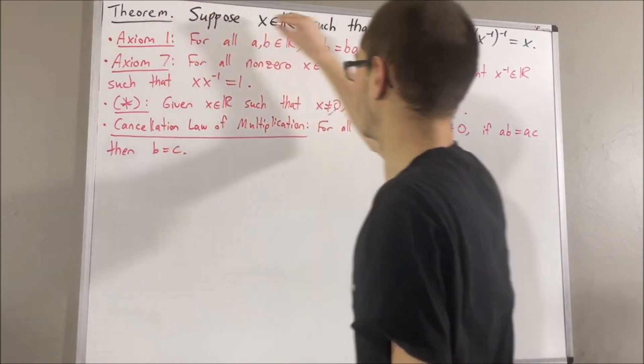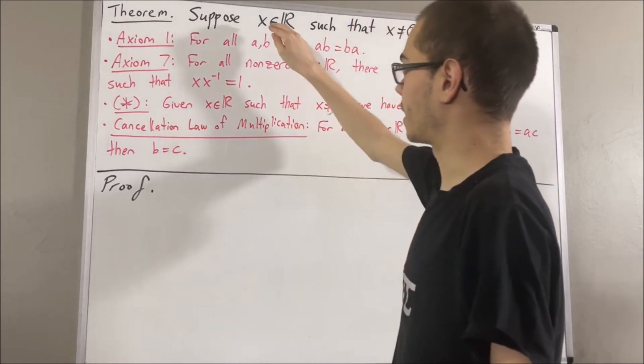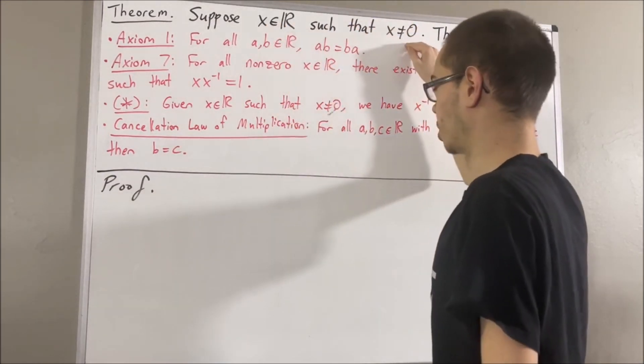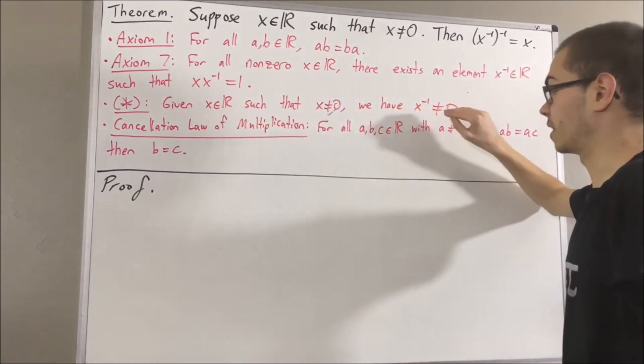Okay, so now let's get into proving this theorem. Let's start out the proof. Since we're given that x is a real number such that x is not equal to 0, let's first note we know that the reciprocal of x is not equal to 0.